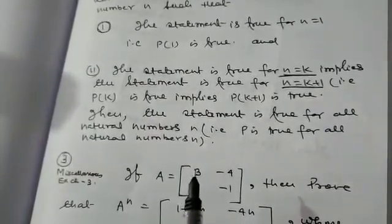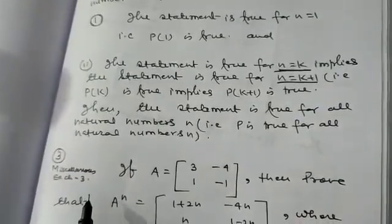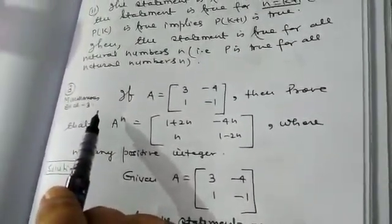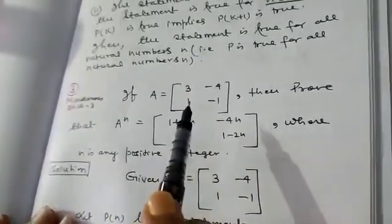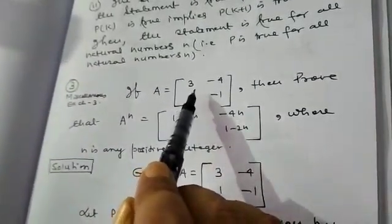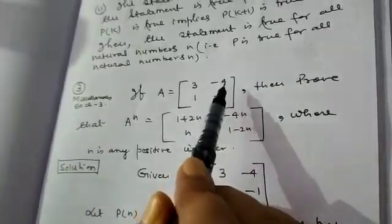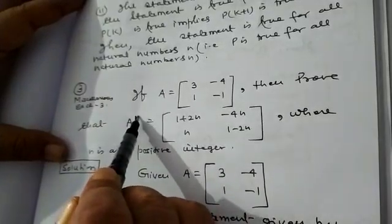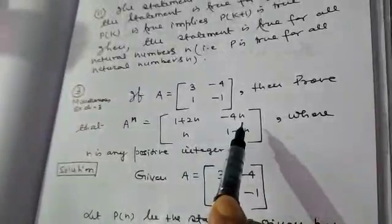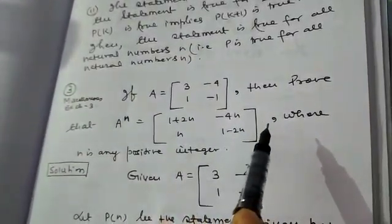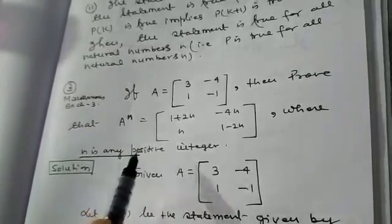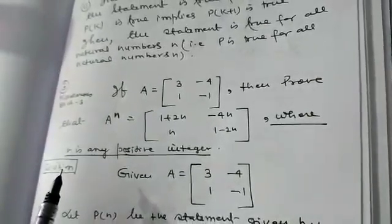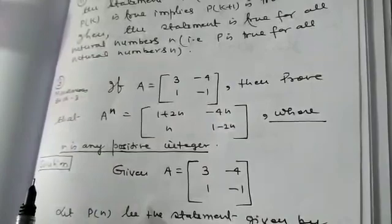Now I want to solve problem number 3 of the miscellaneous exercise of Chapter 3. The problem states: if A is a matrix with elements [[3, -4], [1, -1]], then prove that A to the power N equals [[1+2N, -4N], [N, 1-2N]], where N is any positive integer.